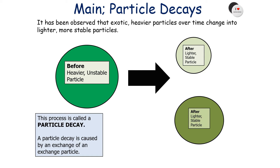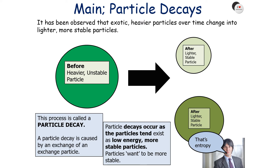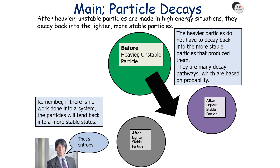It's been observed in nature that exotic heavier particles over time change into lighter, more stable particles — this process is called a particle decay, and it is caused by an exchange of an exchange particle. This process is similar to nuclear decay, but here the particles are changing from one type to another. Particle decays occur as particles tend to exist as low energy, more stable particles. After heavier, unstable particles are made in high energy situations, they decay into lighter, more stable particles.